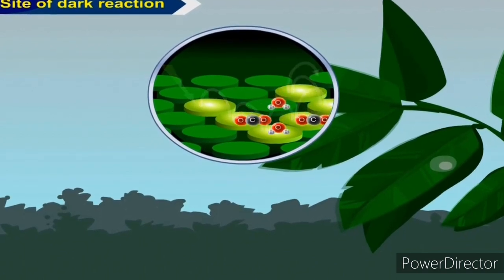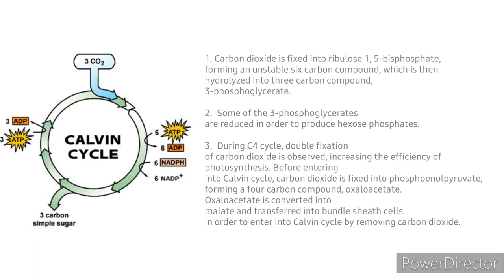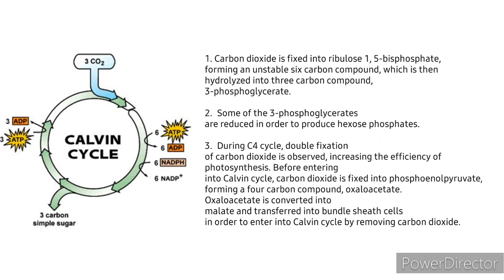Calvin cycle occurs in three steps. During the first step, carbon dioxide is fixed into ribulose 1,5-bisphosphate, forming an unstable six-carbon compound, which is then hydrolyzed into three-carbon compound, 3-phosphoglycerate. The enzyme involved in the process is called rubisco.